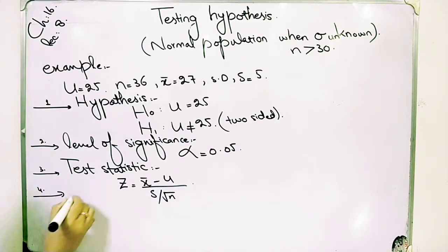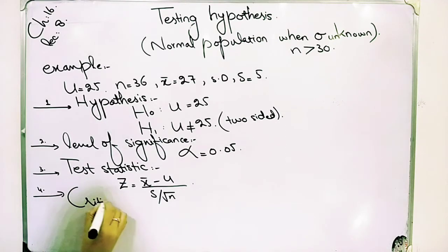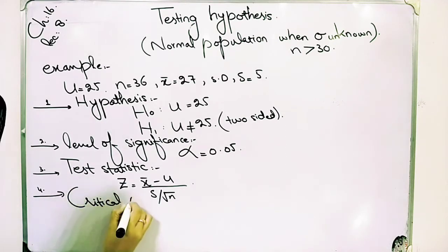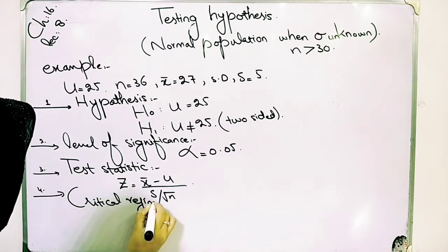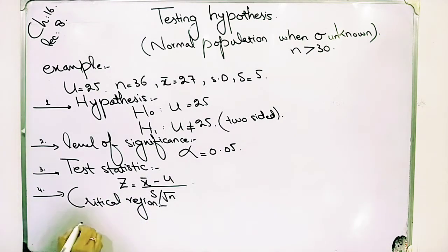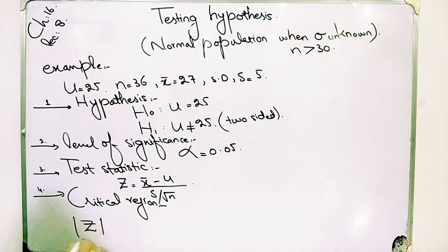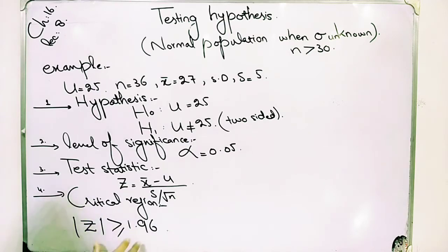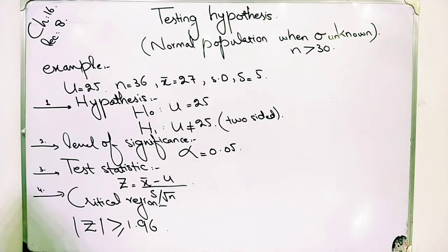Step 4: Critical region. For a two-sided test at α = 0.05, the critical values are z = ±1.96.